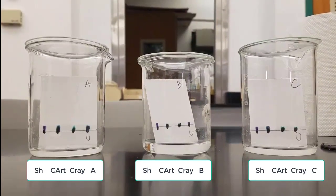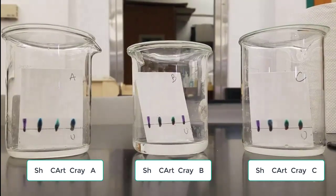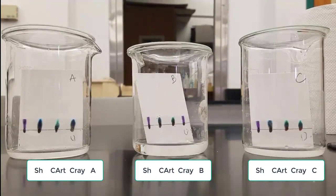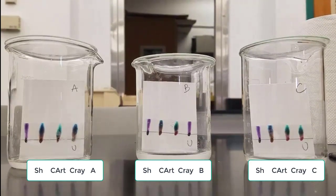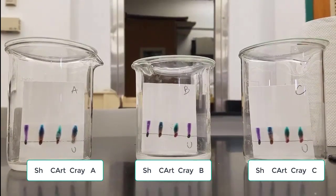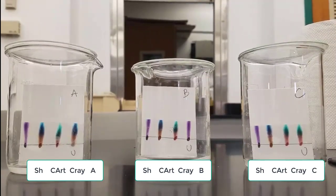You can see those inks starting to move in the methanol, which we expected because we saw that last time. You want to look for on each of them which ink does the unknown match, because that's our goal: to say the unknown is definitely the Sharpie or the unknown is definitely the Crazy Art pen. So you're looking for what does the unknown match on each of them.